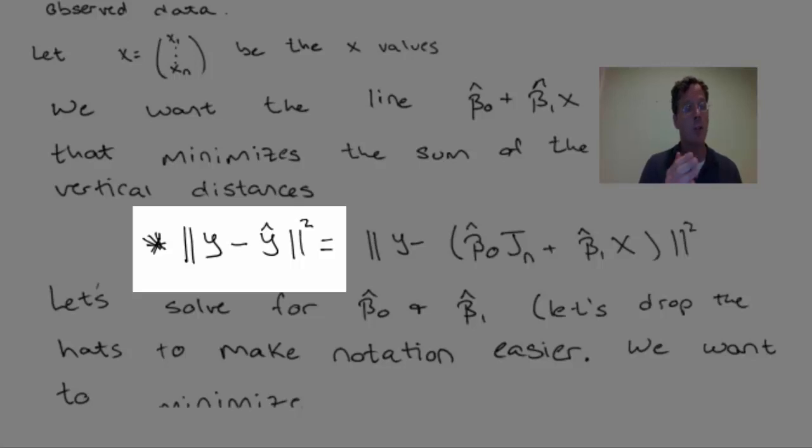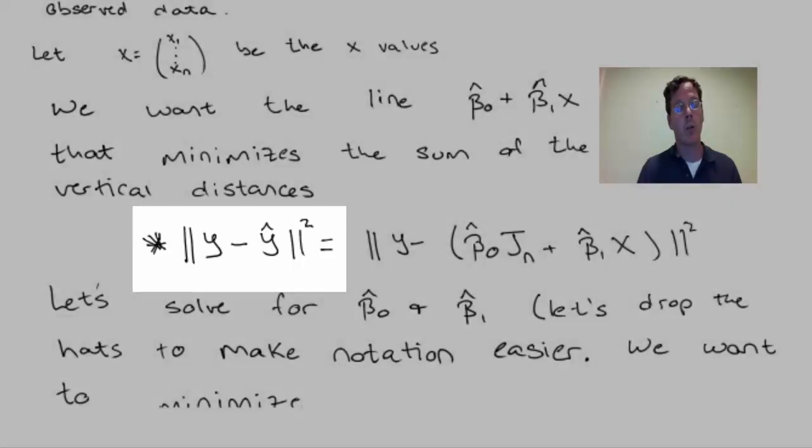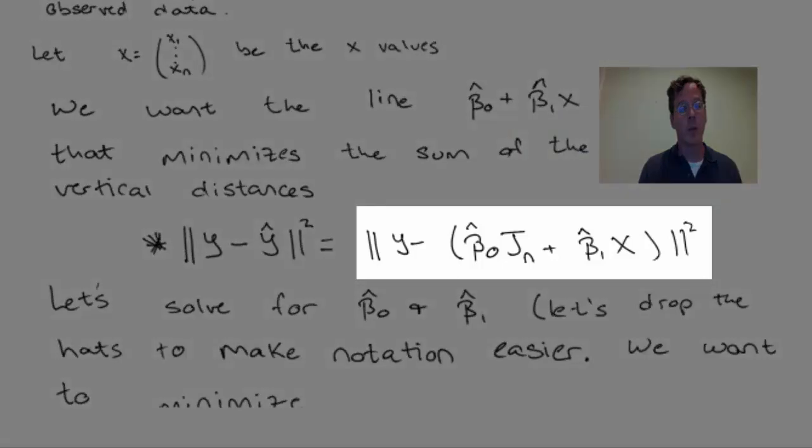and the fitted y values, or in other words, the squared Euclidean norm of y minus quantity beta 0-hat times jn plus beta 1-hat times x.